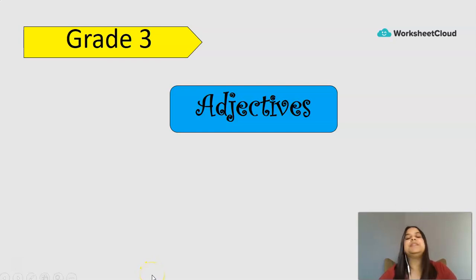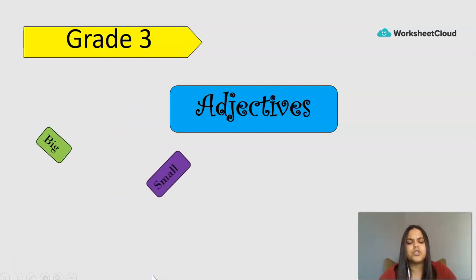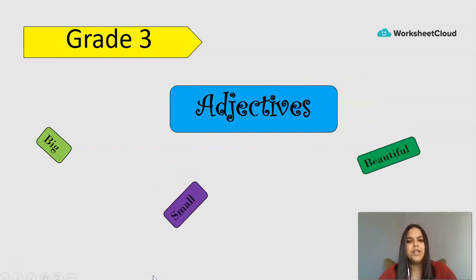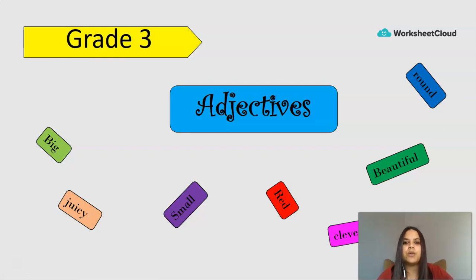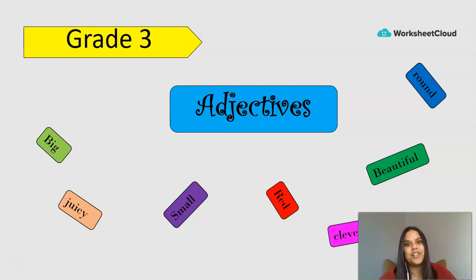Today we're going to be doing adjectives. Adjectives are describing words — like big, small, beautiful, clever, red and round, and juicy. They are all words that tell us more about nouns. I hope you're super excited, Grade Threes, because now we're going to learn some interesting, wonderful, amazing words. I hope you saw what I did there!